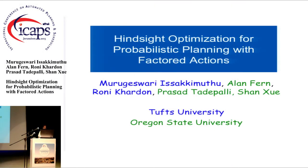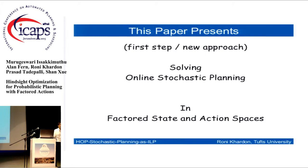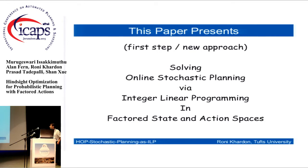This is work by Murugashwari Sakibuta and myself at Tufts University, and Alan Fearn, Prasad Tadepalli, and Shanshu at Oregon State University. What we do in this paper is provide a new approach — really a first step — in online stochastic planning. The main effect is to work in very large state spaces and action spaces, and we do this through a compilation approach to integer linear programming.